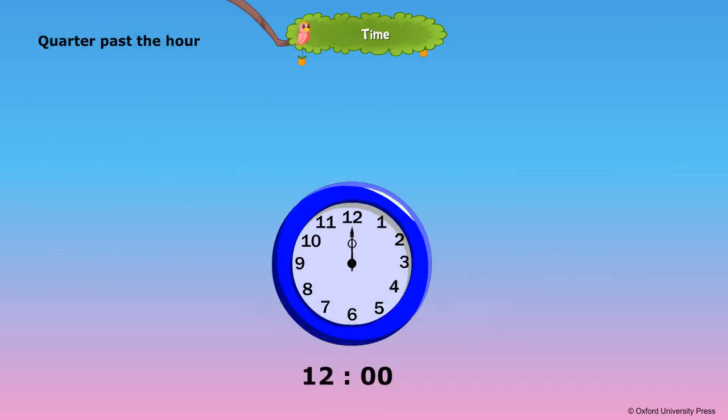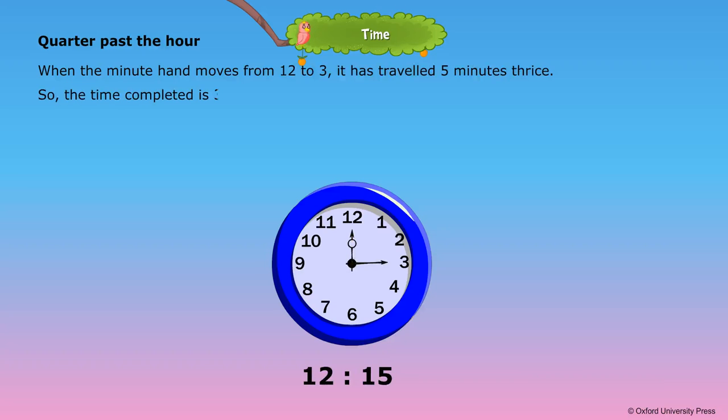Quarter past the hour. When the minute hand moves from 12 to 3, it has travelled 5 minutes thrice. So the time completed is 3 times 5 equals 15 minutes. This is called quarter past.